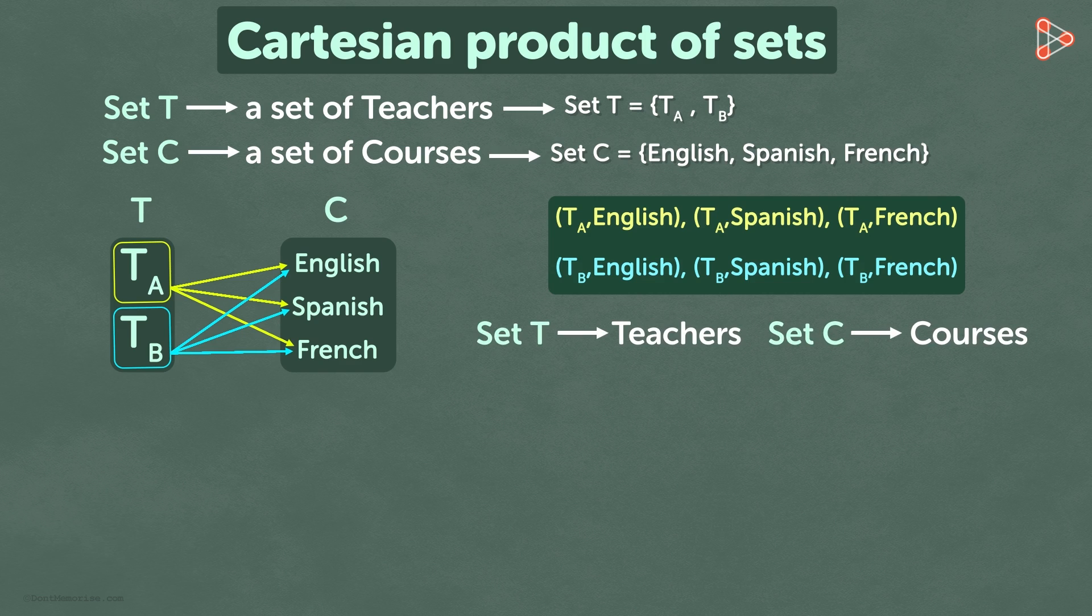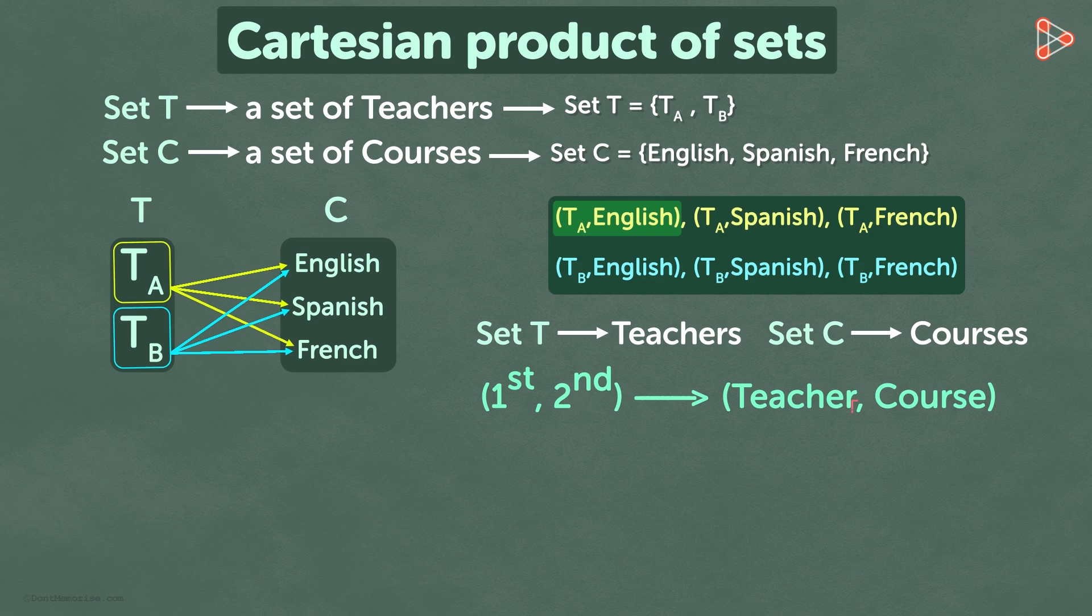Now let's look closely at TA, English. It implies that teacher A teaches English. So our first entry is teacher and the second entry is the course. Teacher and course are separated by a comma and enclosed in round brackets.